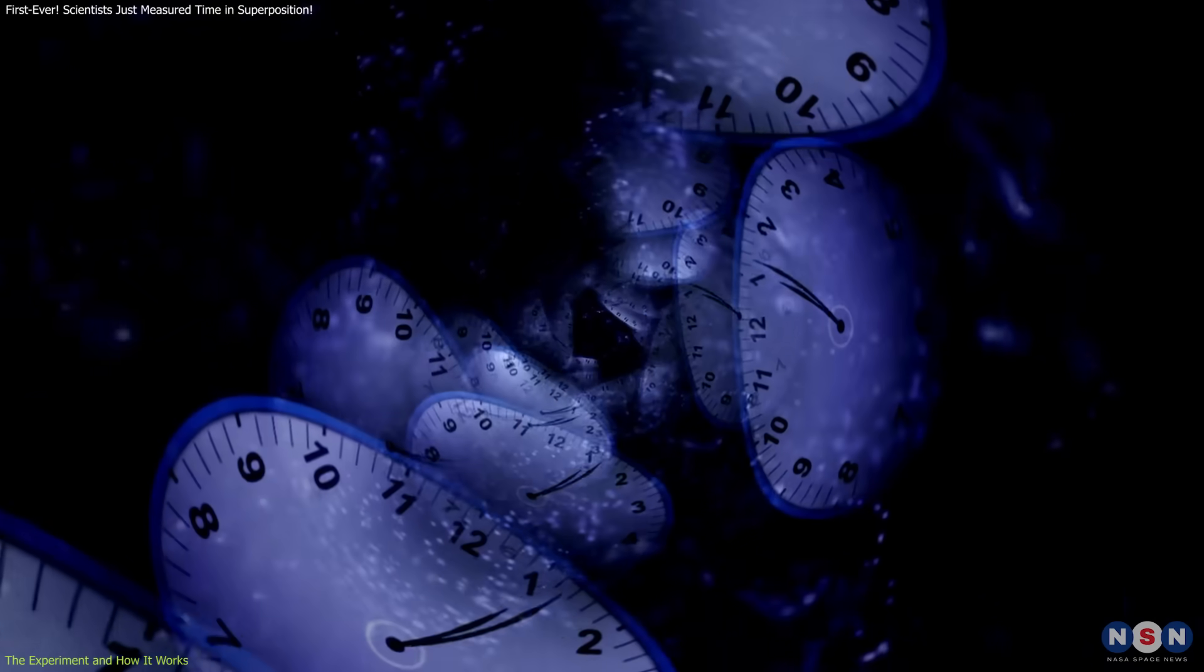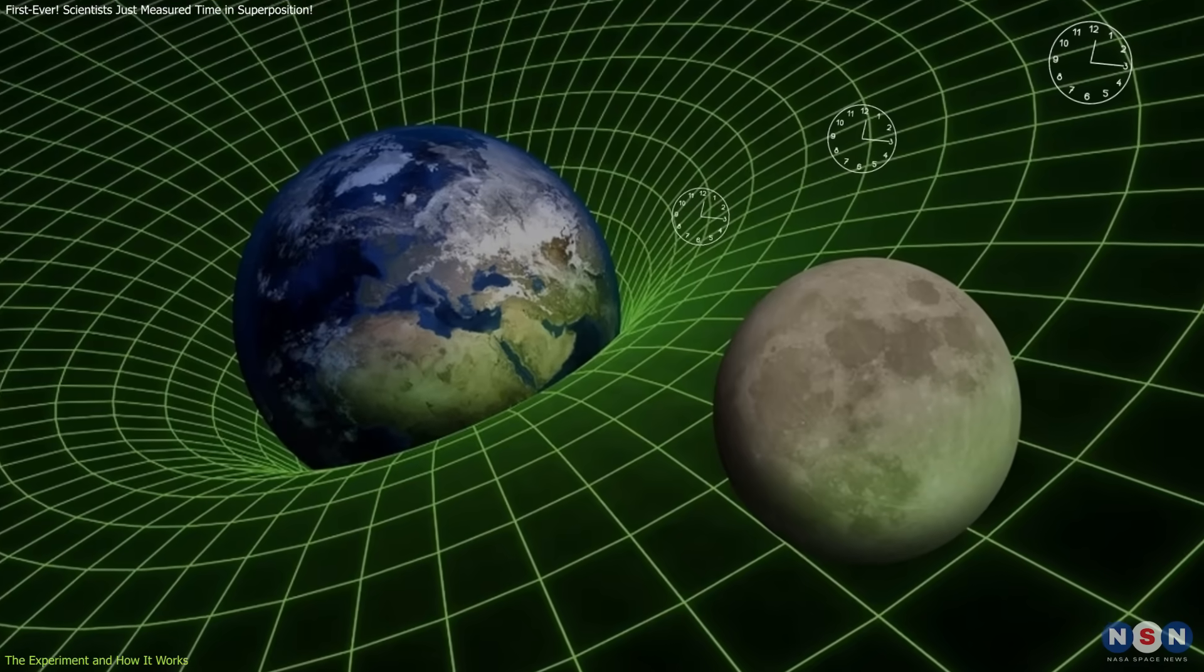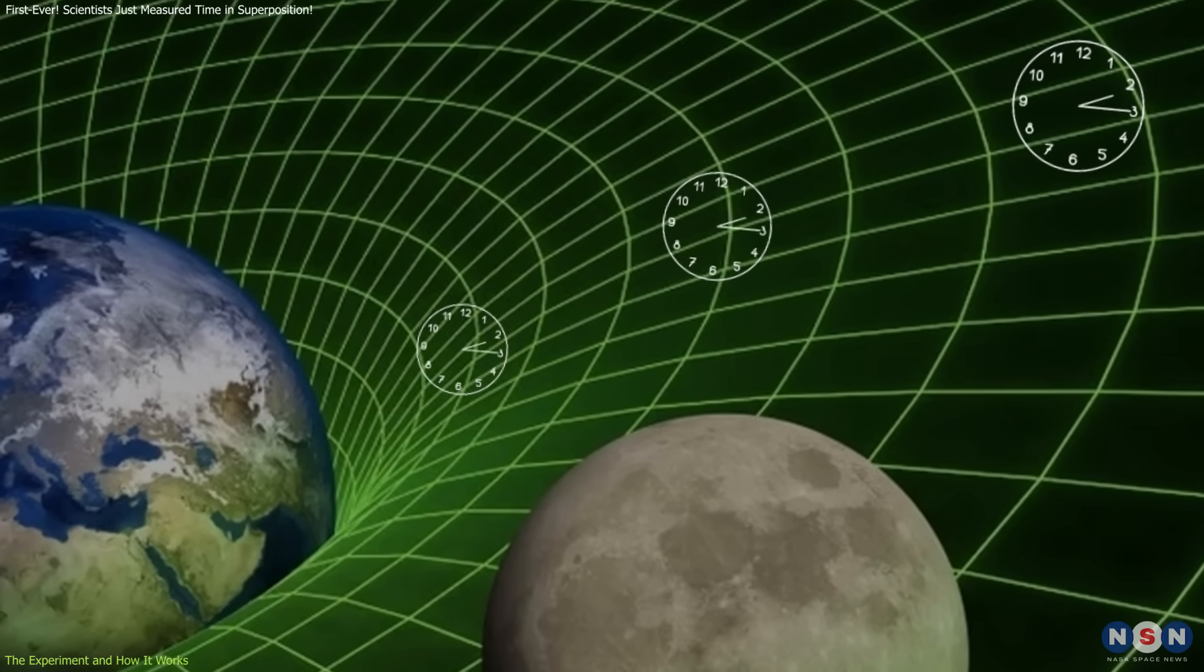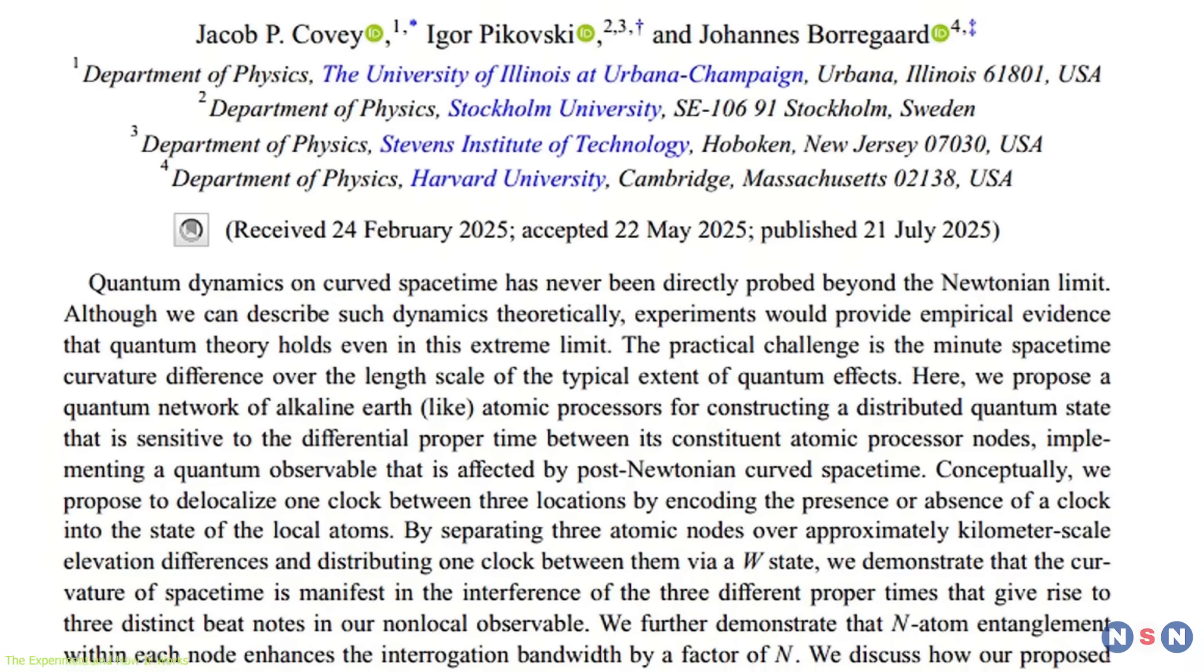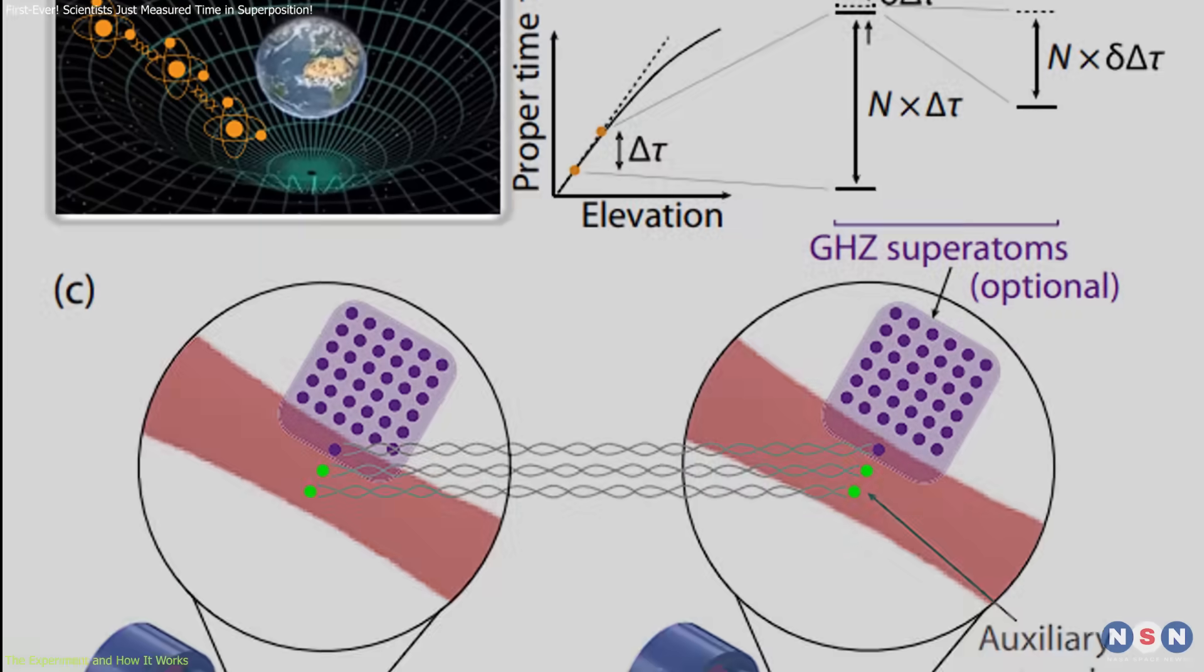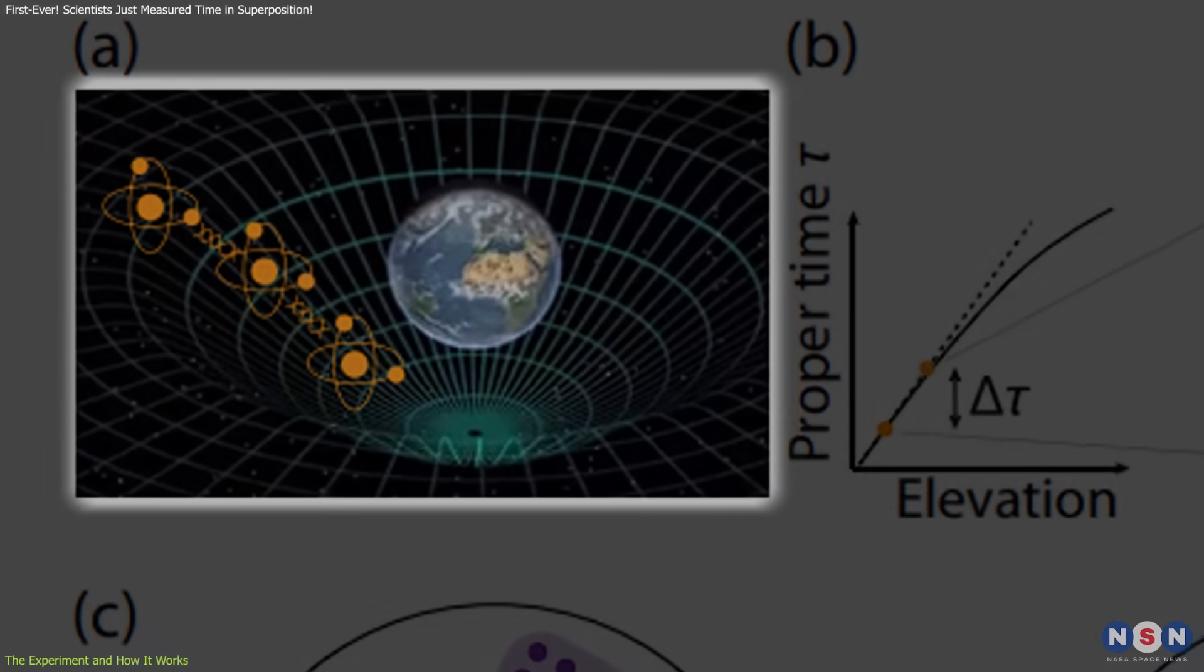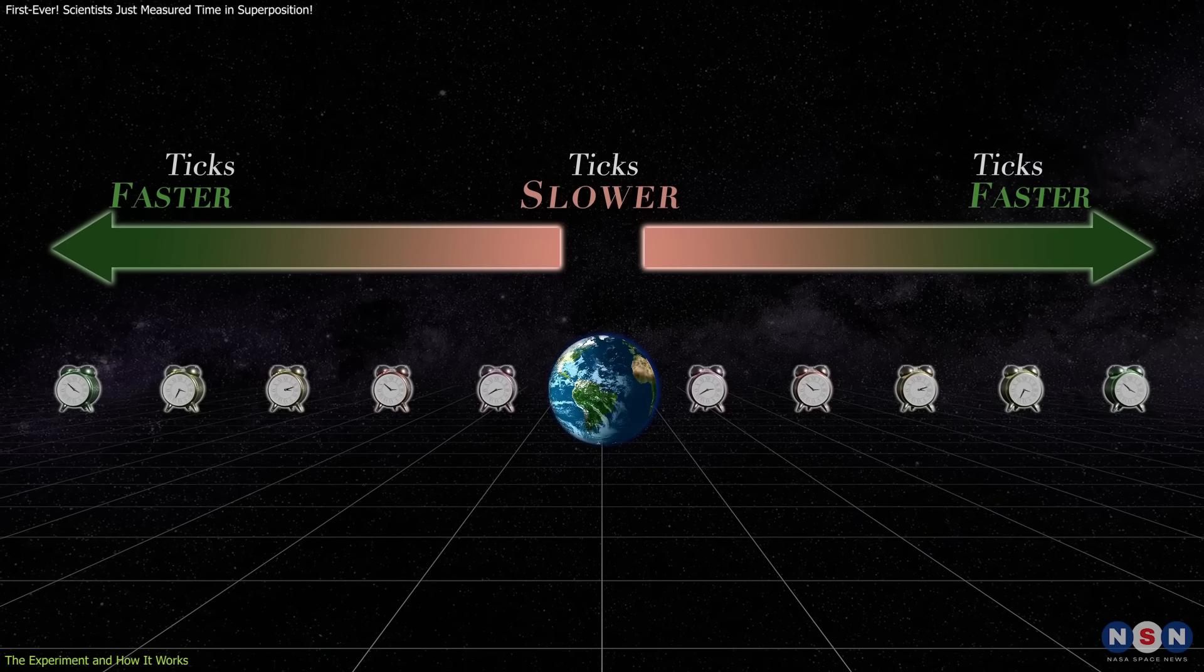The researchers propose placing an atomic clock into a quantum superposition, where it exists across multiple locations at once, each at a different height in Earth's gravitational field. This is made possible by using a specific type of entanglement known as a W-state, which distributes the clock's presence across separate nodes in a quantum network. Each of these nodes experiences a slightly different flow of time due to its elevation.